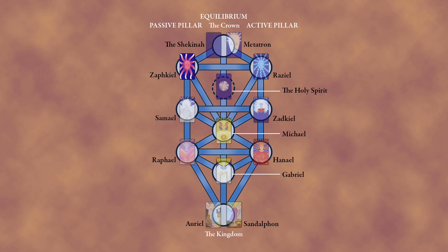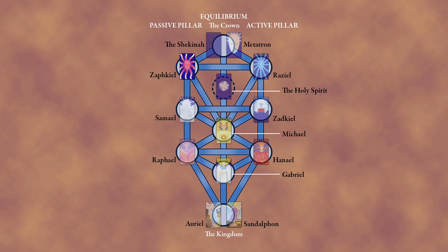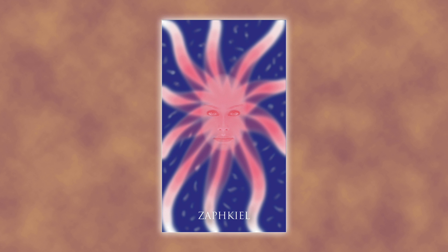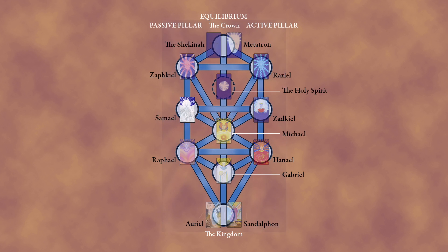In video one, I explained how the first face of the Shekinah, expressed on the tree of life as the Archangel Zafkiel, is about intention. In video two, the second face of the Shekinah is the organizing, pattern-making quality of the divine, which requires discipline, seen as Archangel Zafkiel.